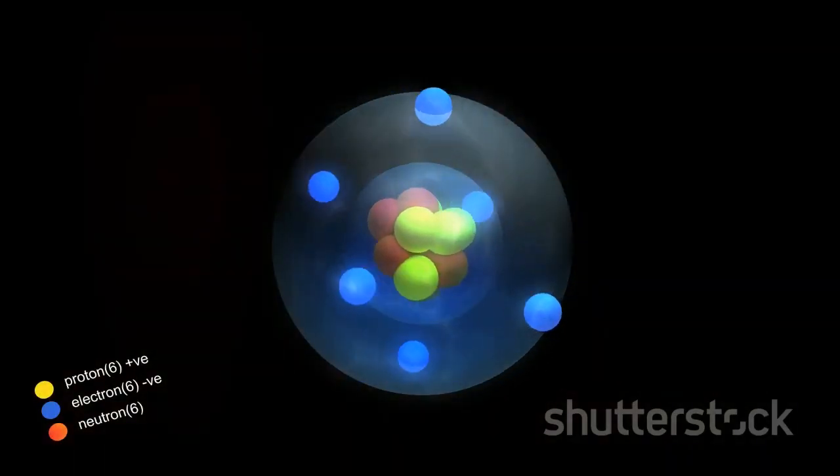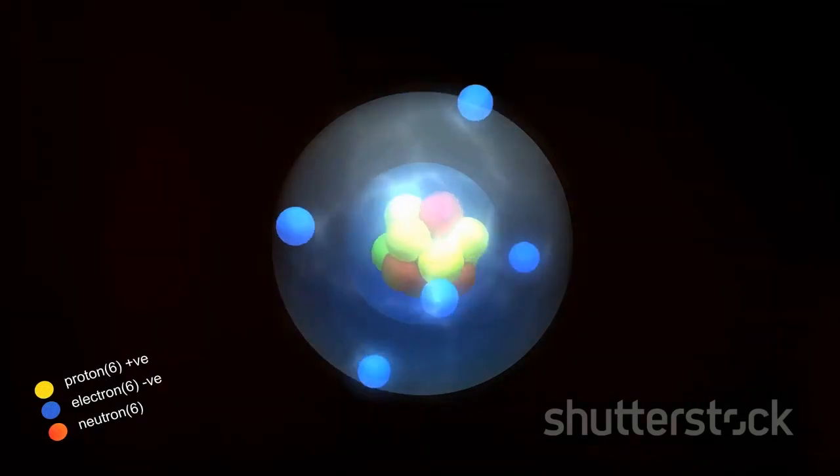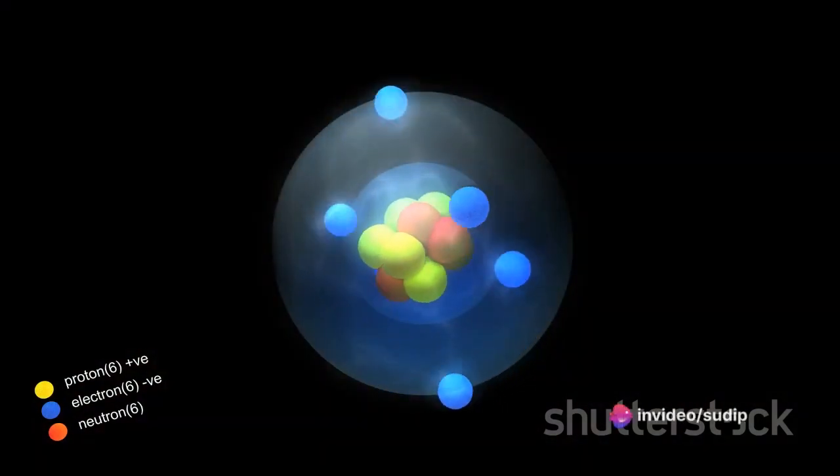Now let's explore atomic number and mass number, two key terms in nuclear chemistry. The atomic number, quite simply, is the number of protons in an atom. This number is fundamental because it determines the identity of the atom.